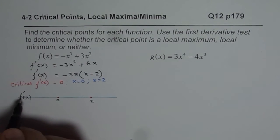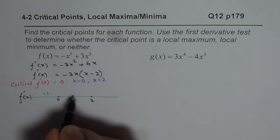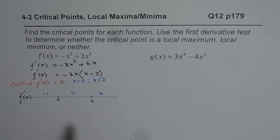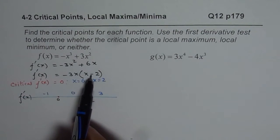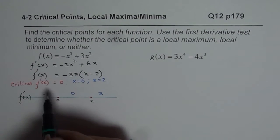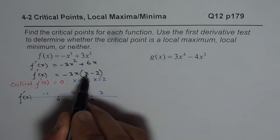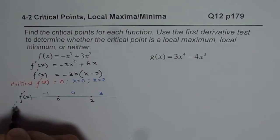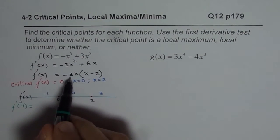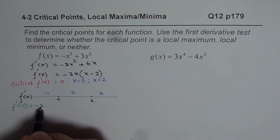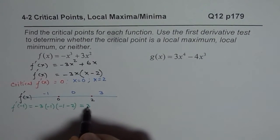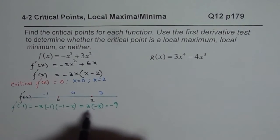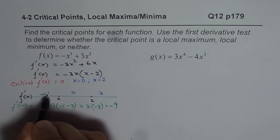Test points: in the interval from minus infinity to 0, we use minus 1. At each interval, we substitute the value into the derivative to see whether it is positive or negative. Substituting minus 1, we get minus 3 times minus 1 times (minus 1 minus 2), which gives minus 3 times minus 2, equaling negative 9. The derivative is negative.